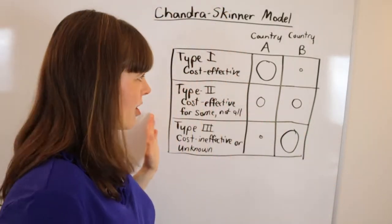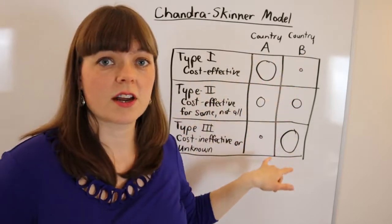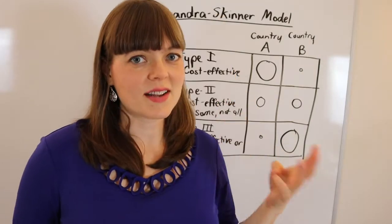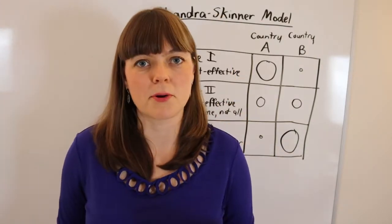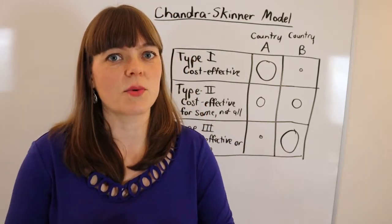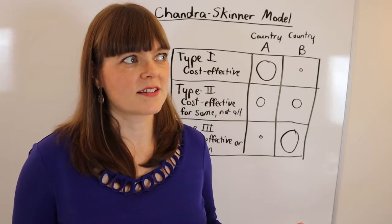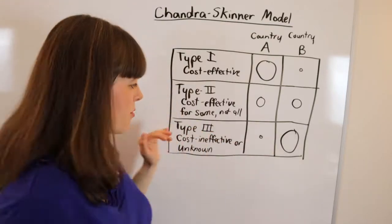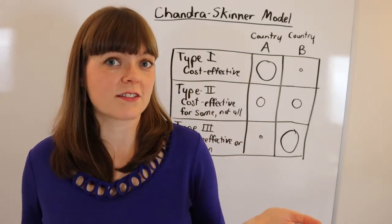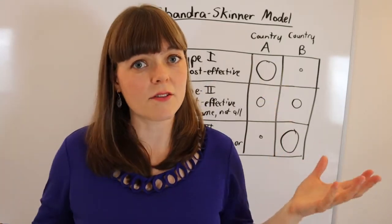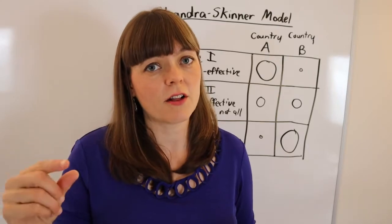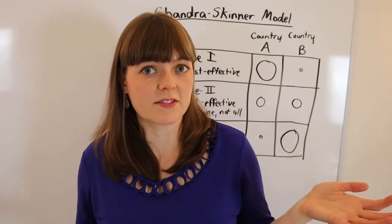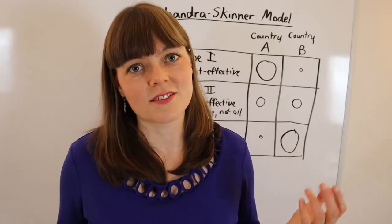To think about this, there's a diagram looking at two different countries with different emphases in terms of the technologies they bring into their health care system. There are three types of technologies defined by Chandra and Skinner. First are cost effective technologies — type one — that have a really high benefit to the patient per dollar spent. Type three technologies are cost ineffective: they cost a ton of money for a very small impact on health. Also clumped into type three are technologies where we have no idea about their effectiveness or cost effectiveness.